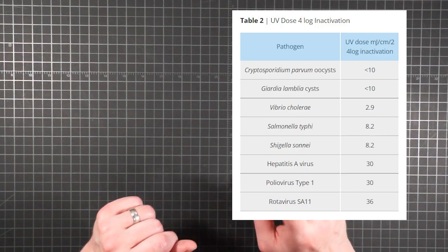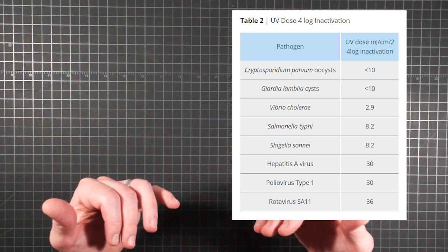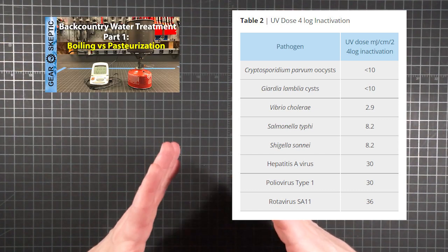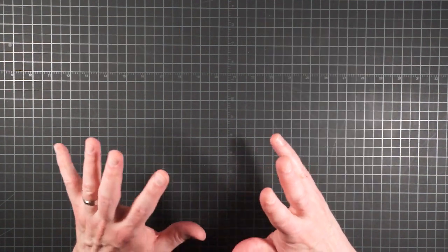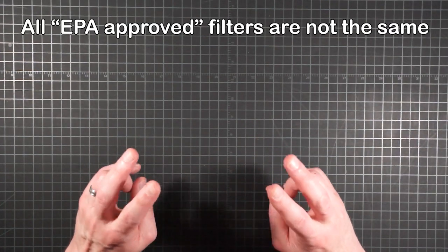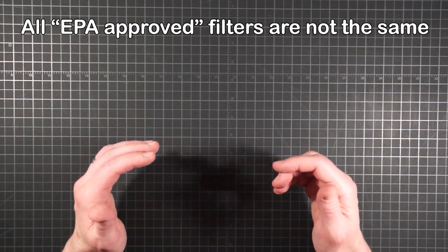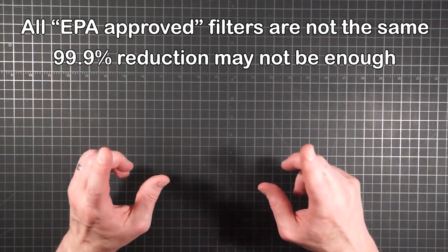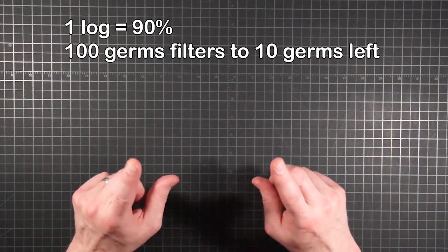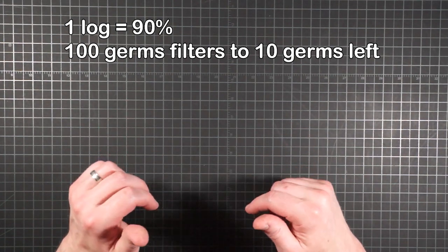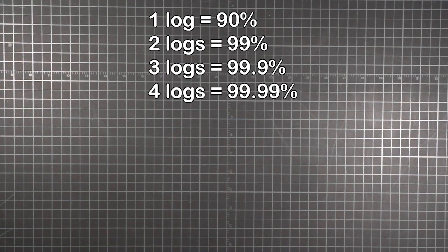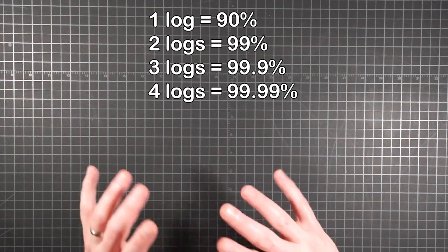And for the numbers junkies, Table 2 shows the data put another way. In this case, we have the UV dose required to produce a 4-log inactivation of a list of pathogens. For an explanation of what a log of inactivation means, I recommend starting with part one of this series and continuing in order. If you thought all EPA-approved filters were essentially equivalent in their ability to make water safer, or that 99.9% removal was enough, I urge you to check out the rest of the videos in this series. But for a quick review, a log of removal is a 90% reduction. Two logs is 99%, three would be 99.9%, four equals 99.99%, and on it goes.